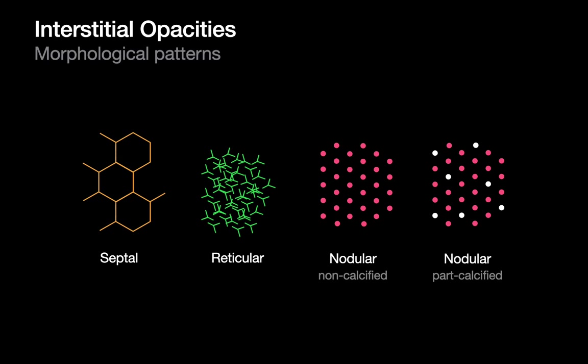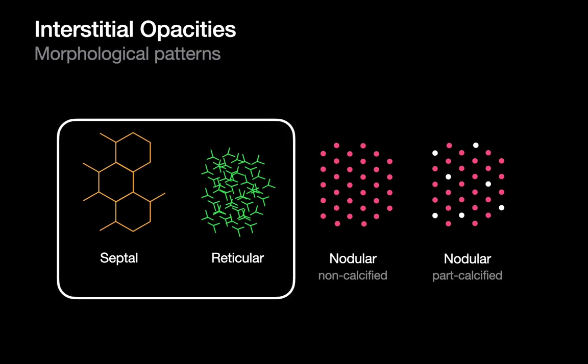On a CT image, you have a much better shot at distinguishing these patterns apart from each other. We discussed the nodular interstitial pattern in a prior talk. This one is going to be a discussion focused on the reticular and the septal interstitial patterns.